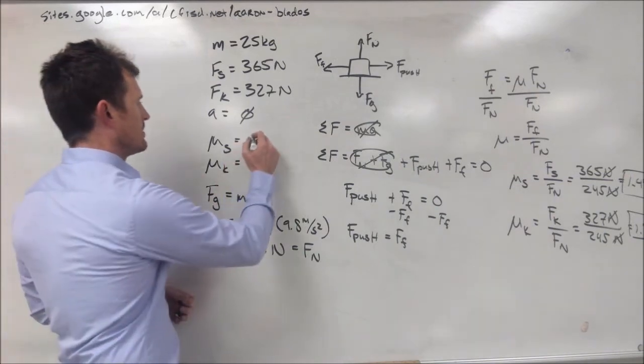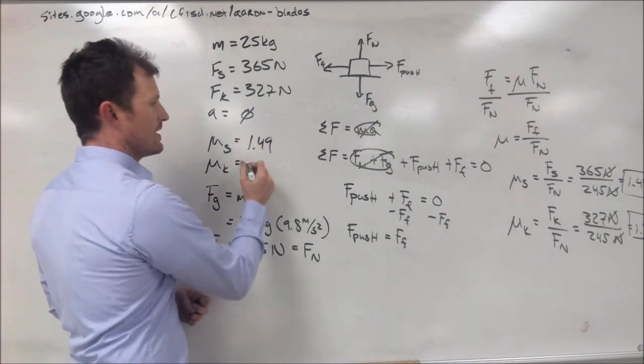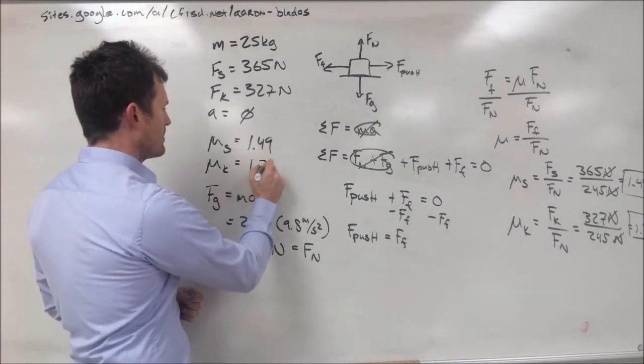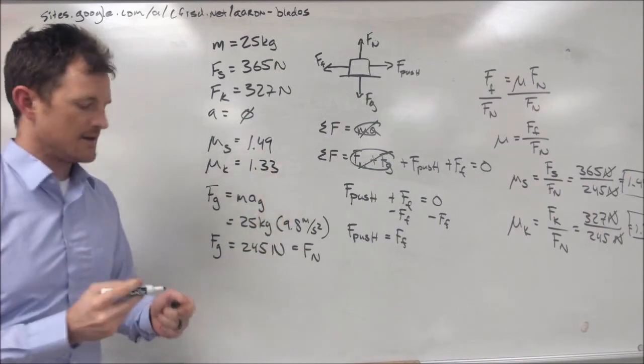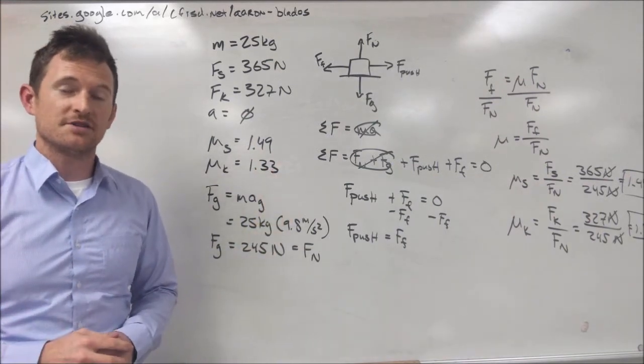So, here we have our answers. For mu s, we have 1.49, and for mu k, we have 1.33. Excellent. I hope this was helpful, and I'll see you in class.